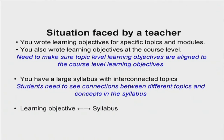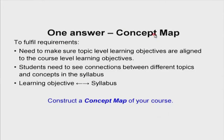What is needed is a back-and-forth connection between learning objectives at all cognitive levels — course, module, unit, and class level — and the syllabus. These two concepts have to be interlinked. In all these sessions we first set up the problem, then think of a solution. Here, the problem is the situation faced by the teacher, and the solution is given by the concept map. The concept map helps us fulfill these requirements: aligning objectives at all levels, and helping students see the connections.